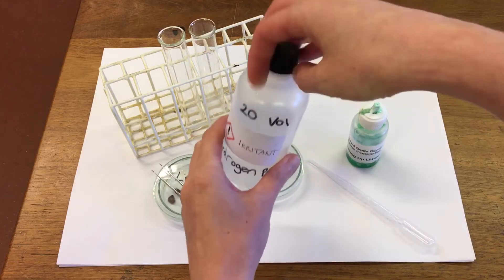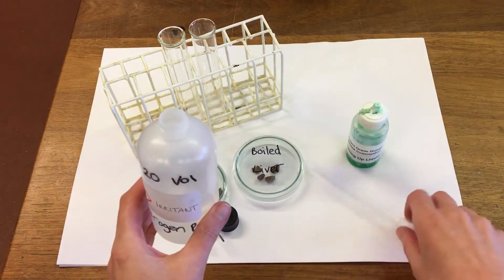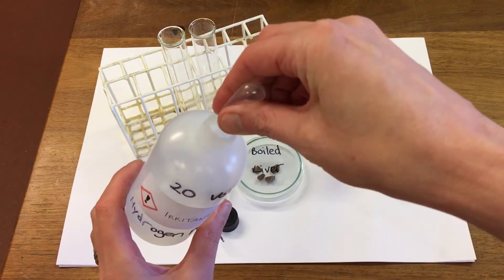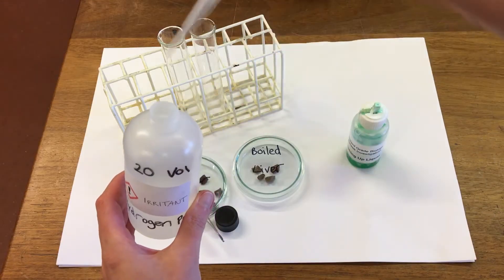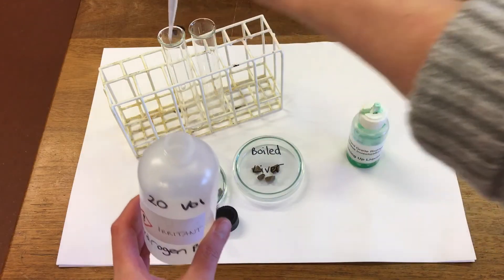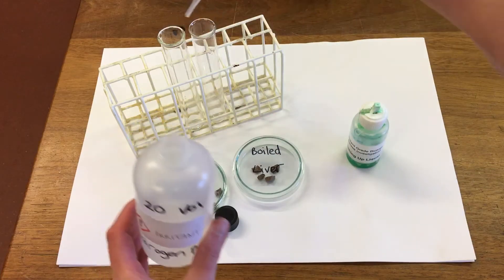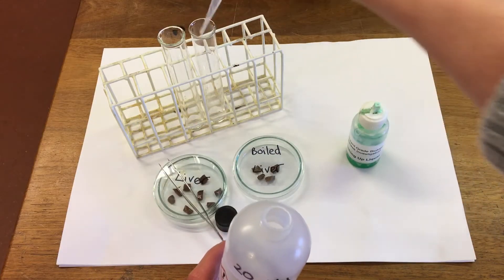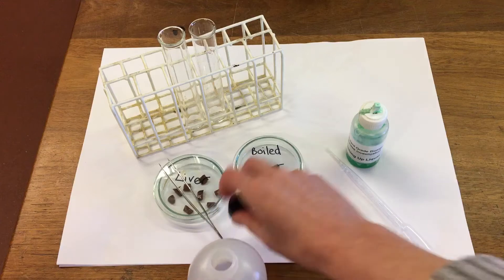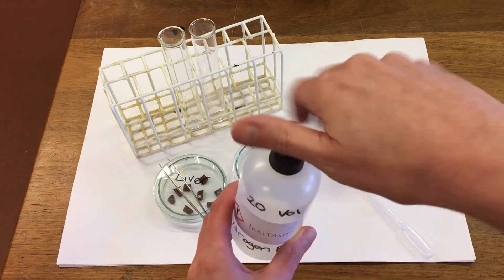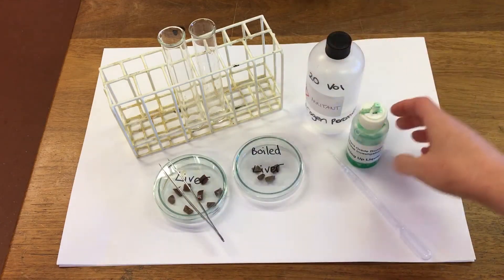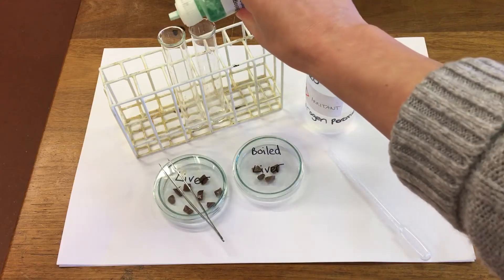So first of all we'll start with our hydrogen peroxide. We're going to put two mls into each tube. I'm then going to add a couple of drops of detergent.